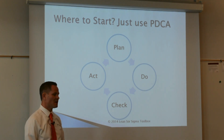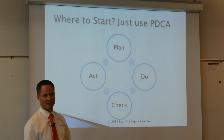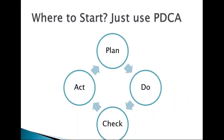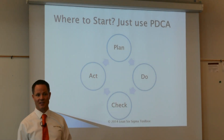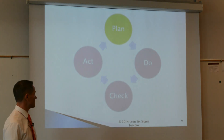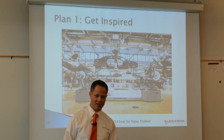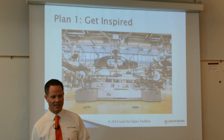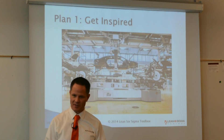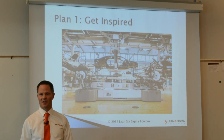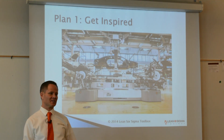Ultimately we're in business to make money, and everything we do should drive toward that end goal. When starting lean in an organization, we can use the Deming cycle — the continuous improvement cycle of Plan, Do, Check, Act. It's a very simple four-step methodology you can use to plan virtually anything and get it done.